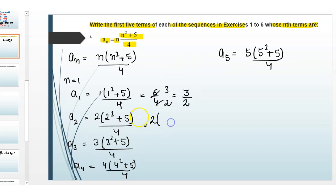Now a2: 2 times (2² = 4 plus 5) divided by 4. So 2(4 + 5 = 9)/4 = 18/4 = 9/2.